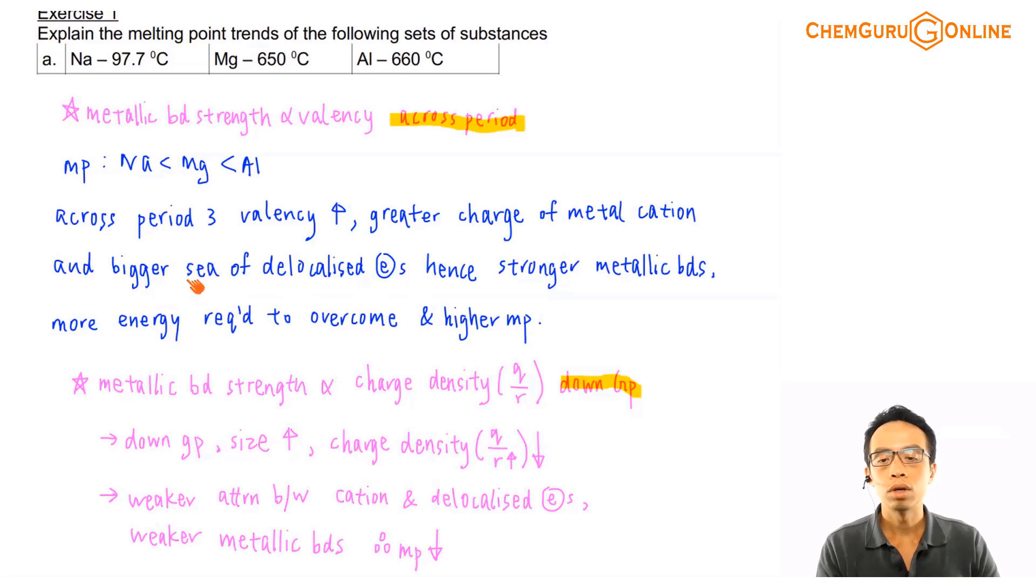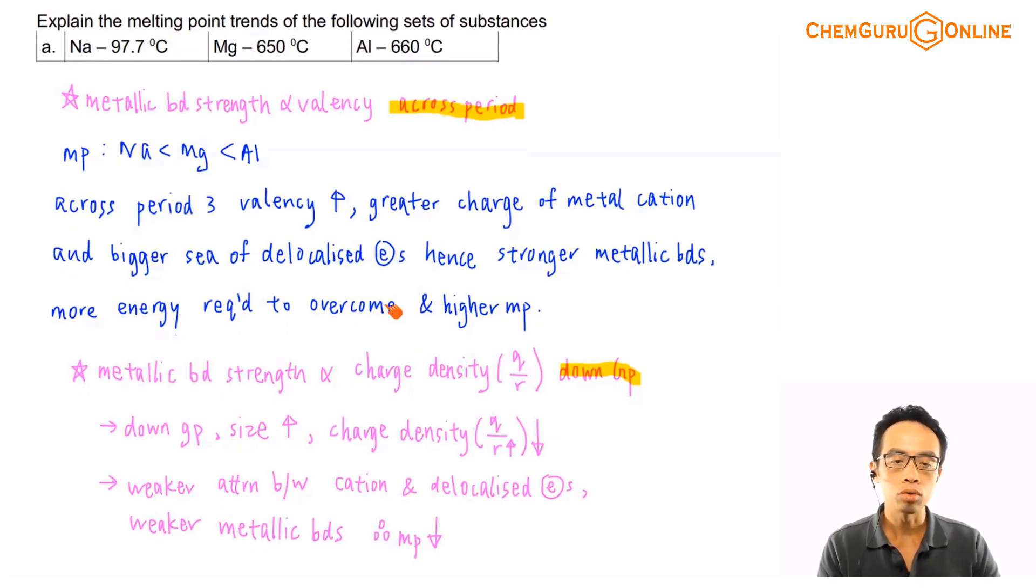I have a bigger sea of de-localized electrons, so the metallic bond is stronger, more energy required to overcome, melting point is higher. I think we do need to know that when I'm comparing melting point of metals across the period.